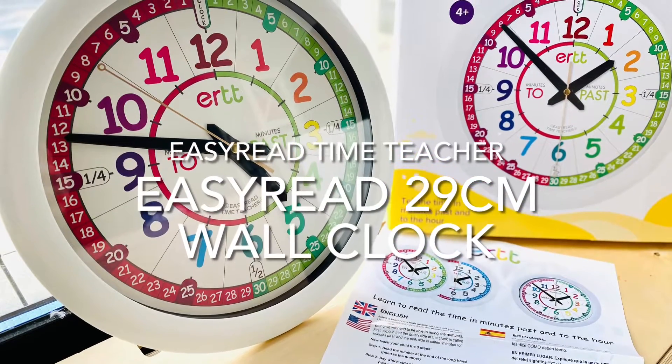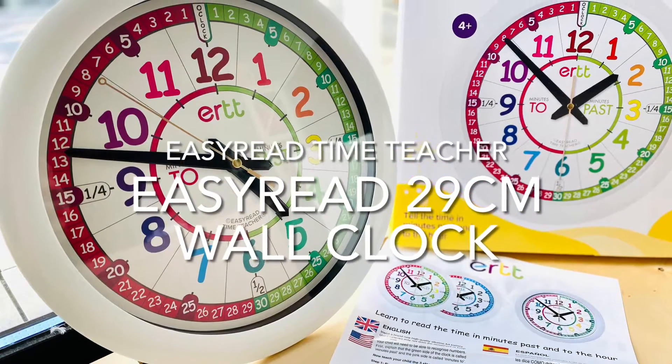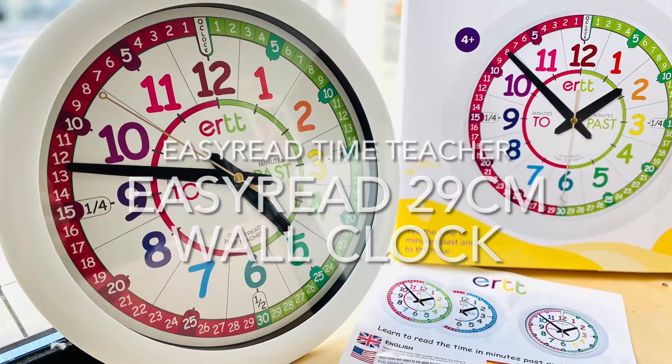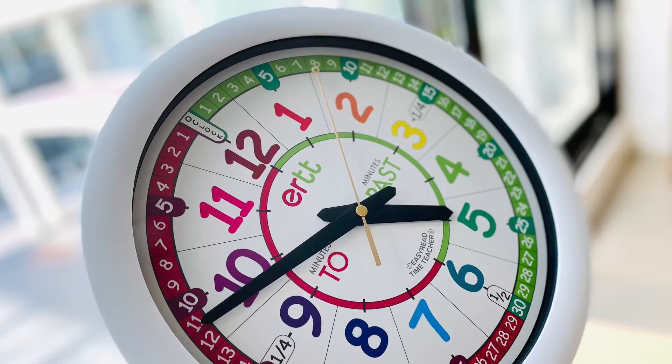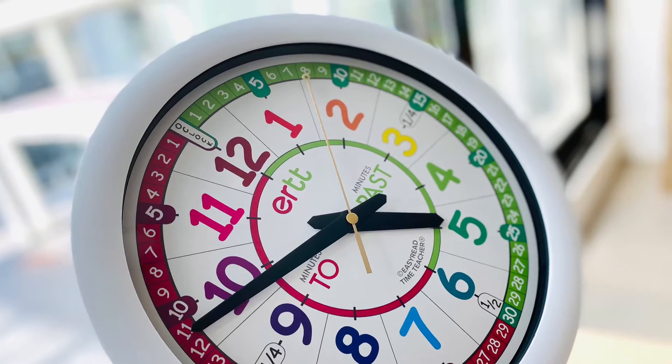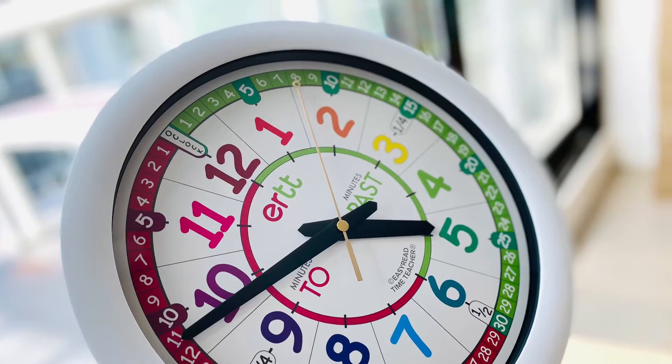Easy Read 29cm Wall Clock by Easy Read Time Teacher. Why I love this clock? Number 1: I love the cleverly revamped clock surface that helps us identify time in the nearest minute in a straightforward and obvious way.